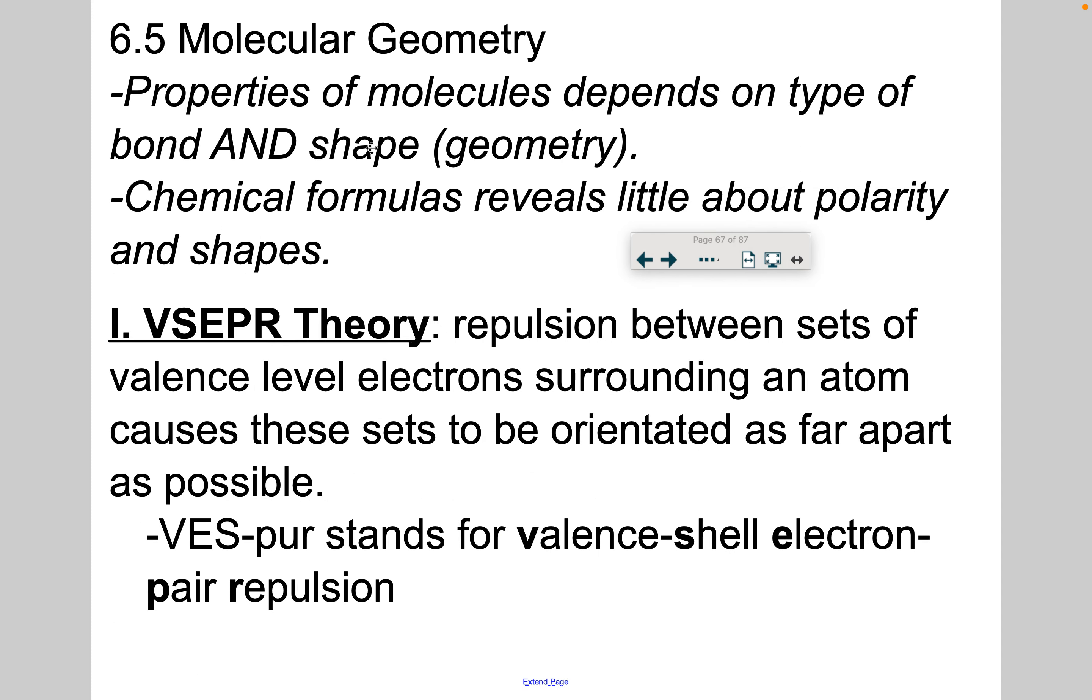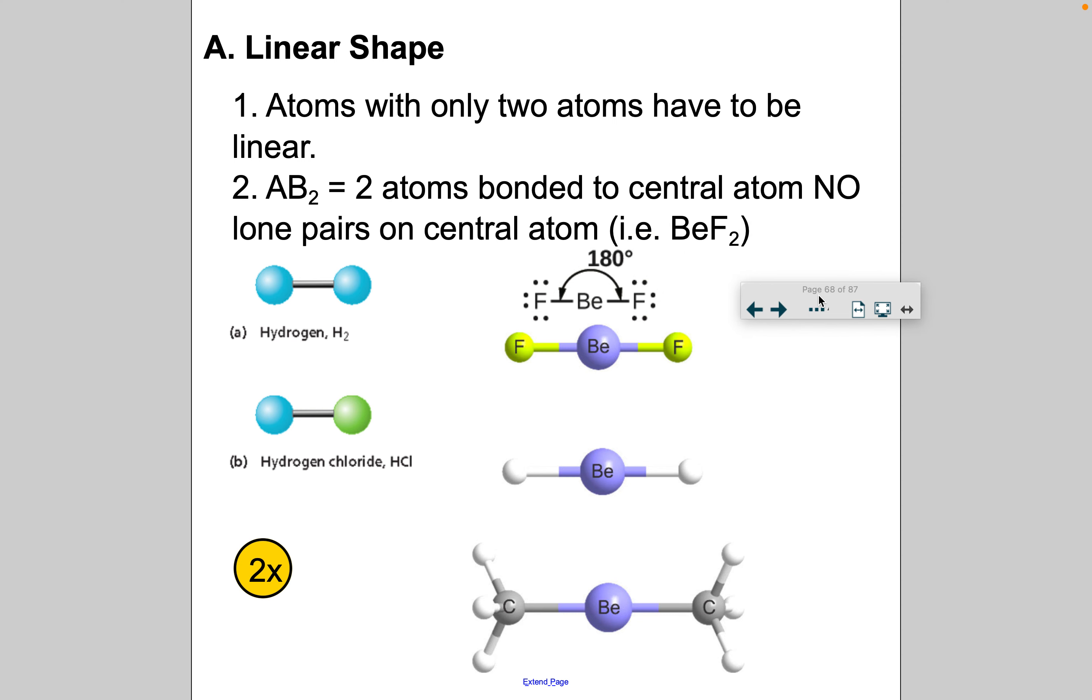So properties of molecules do depend on the type of bond—metallic, ionic, covalent—and shape, which means geometry. And chemical formulas can reveal very little about the polarity and shapes. And so in comes the VSEPR theory, where we're basically looking at sets of valence level electrons surrounding the atom. And these valence electrons want to be orientated as far apart as possible because of the repulsion forces. So VSEPR stands for valence shell electron pair repulsion. What's the maximum degree of distance that we can have these valence electrons away from each other as we arrange the atoms and their bonds?